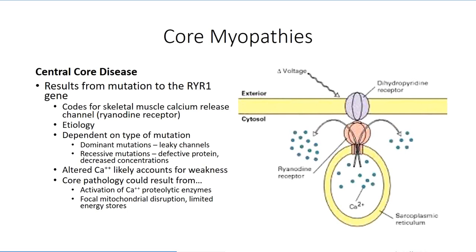We once again see some heterogeneity in the disease. Some mutations in RYR1 can be inherited in an autosomal dominant fashion. It's believed that these mutations result in leaky channels that cause chronic elevations in calcium within the sarcoplasm. In contrast, other identified mutations are known to follow an autosomal recessive inheritance pattern, where the mutation results in a malfunctioning protein that requires two defective copies for symptoms to manifest.